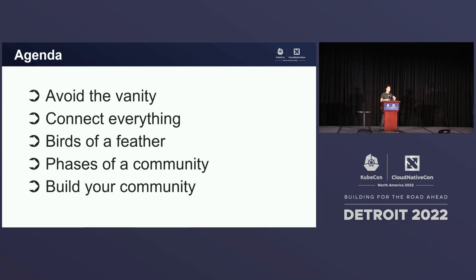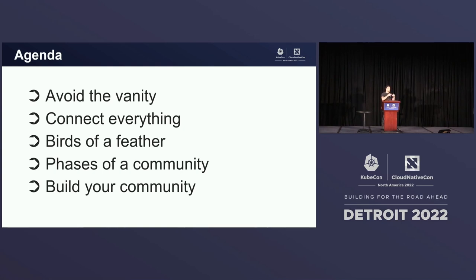So today's agenda: we're going to talk about avoiding vanity metrics, how to connect everything together, bringing all of your tools into one place, how to group your community members so you understand what things to do for which groups and know what things are going to work to get them to those other groups. Then we're going to talk about the phases of your community growth cycle, starting from one phase, understanding what the next growth phase is, how to make that bigger, and so on.